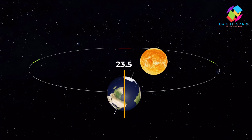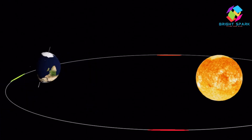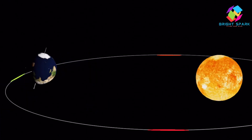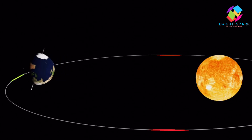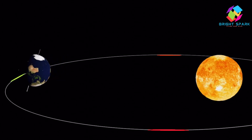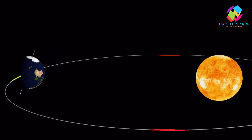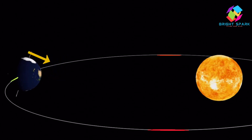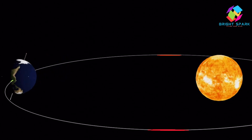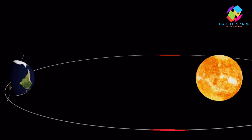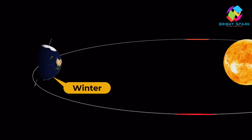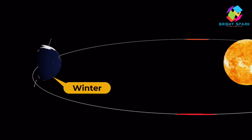This tilt is why we have seasons. When the earth moves around the sun, different parts of the earth lean toward or away from the sun at different times of the year. When your part of earth leans toward the sun, it's summer. When it leans away, it's winter. More sunlight equals warm summer; less sunlight equals chilly winter.